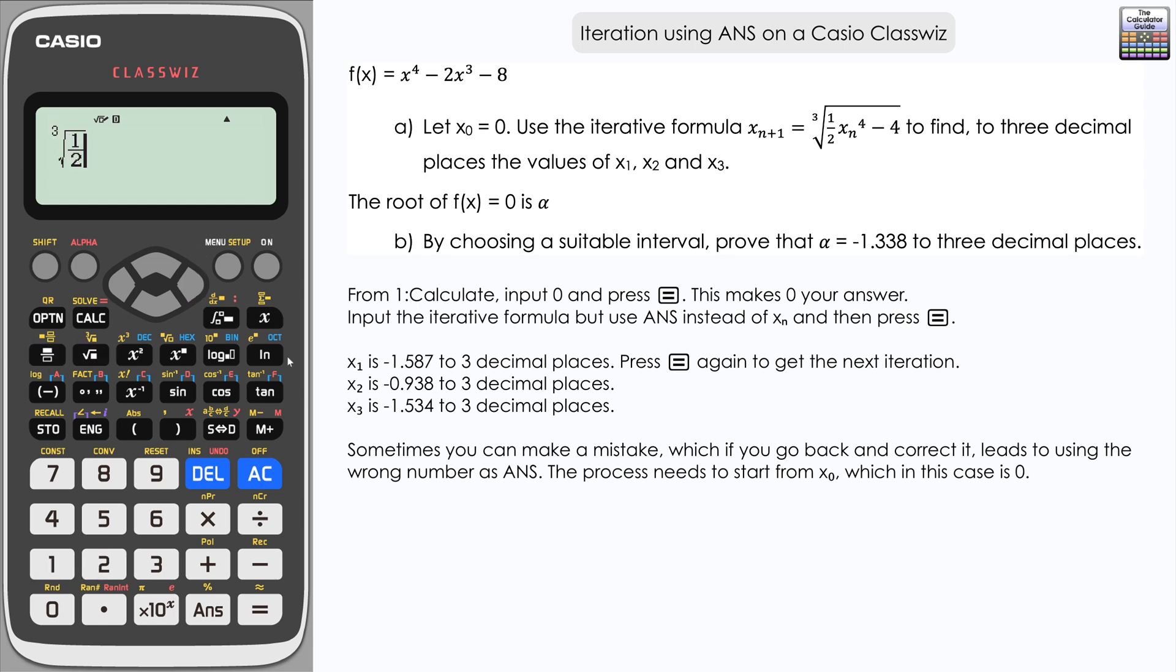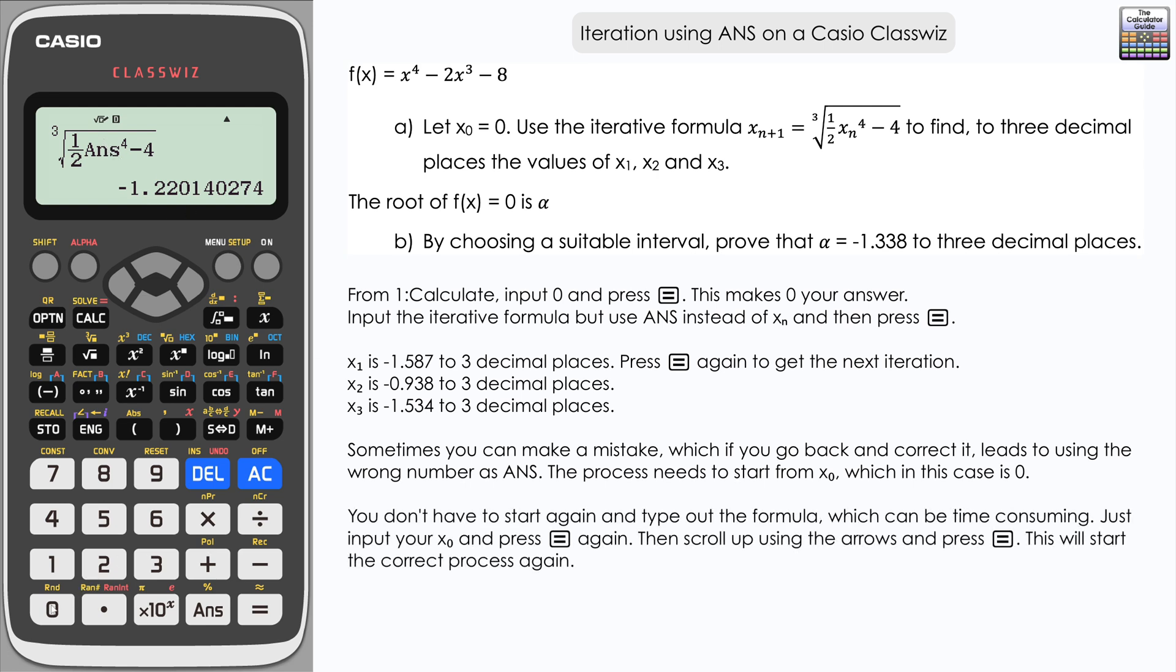We want to start the process with an ANS of zero. Let me show you what I mean. If we start again by inputting answer zero, and let's say I inputted the formula incorrectly—let's say I made it ANS squared rather than x to the power 4, everything else is correct. If I press equals, I've got some iterations here, but these are incorrect. I've realized I should have inputted 4 as a power. If I go back and change that to power 4, it will use the ANS that we currently have here, negative 1.4456 and so on.